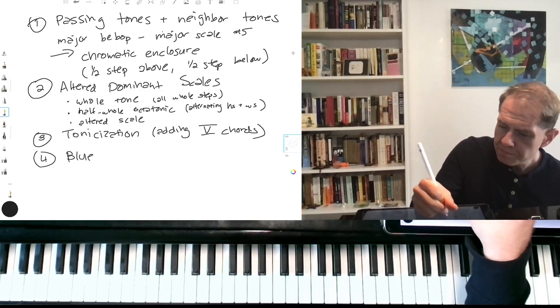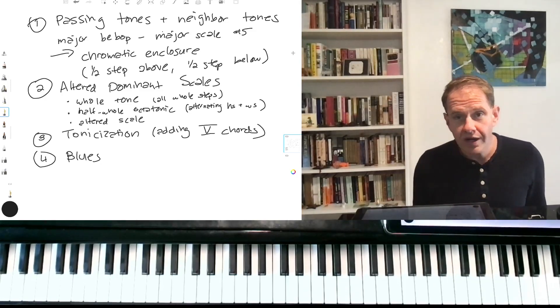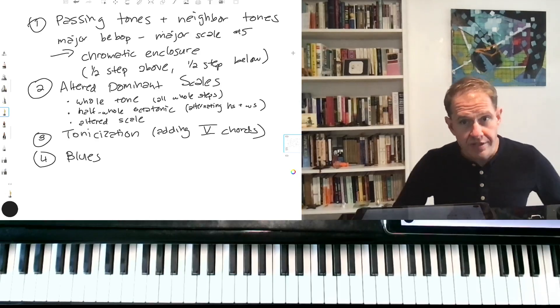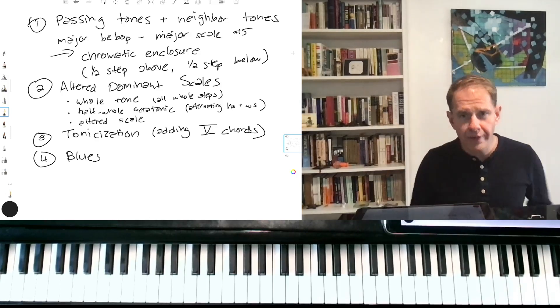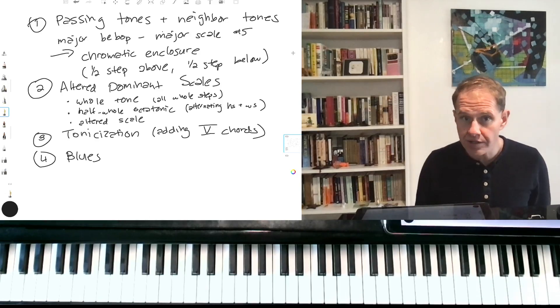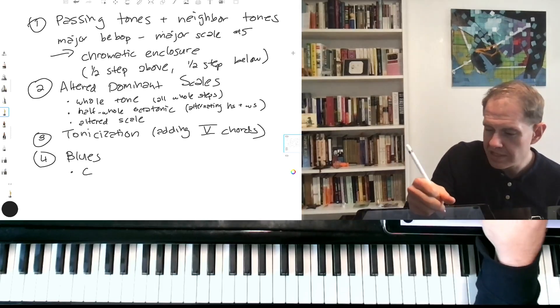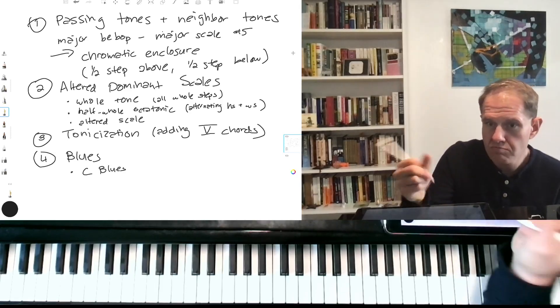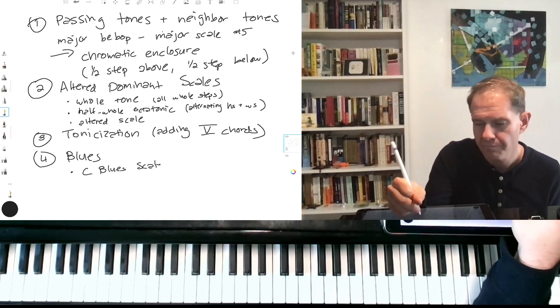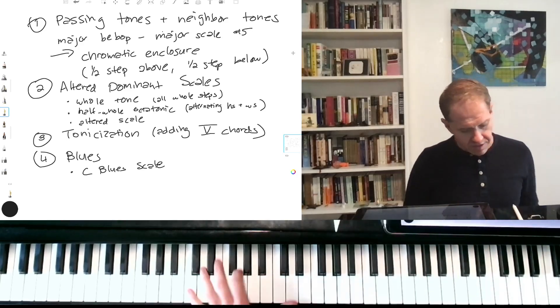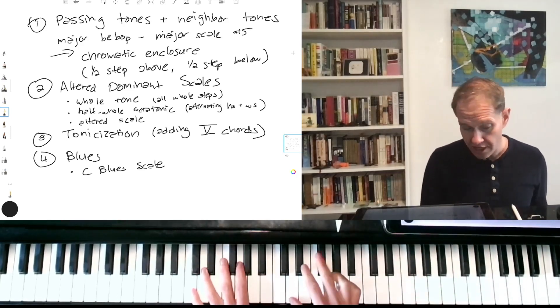So tonicization can be super, super useful. And then number four is blues. Whenever you have a chord progression that's clearly grounded in a single key, you can use the blues scale of that key. So here, you know, we're doing this in C, so I could use some C blues scale. So instead of playing C major scale all the time, I could throw in a little blues.